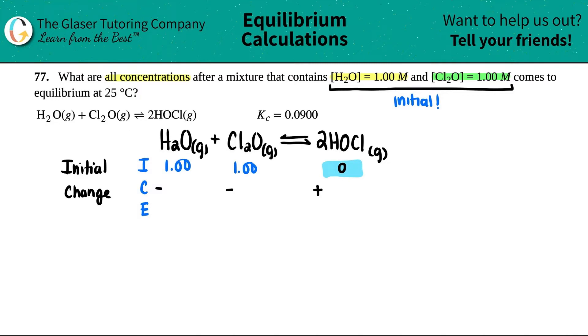How much? We don't know, so we use a variable, and the variable of choice is always x. But we have to subtract or add based on our coefficients. There was no coefficient for H2O and Cl2O, so there's a one, and then there's a two for HOCl. This would be minus 1x, which is just minus x. Same here, minus 1x is just minus x. Over here there's a two, so plus 2x.